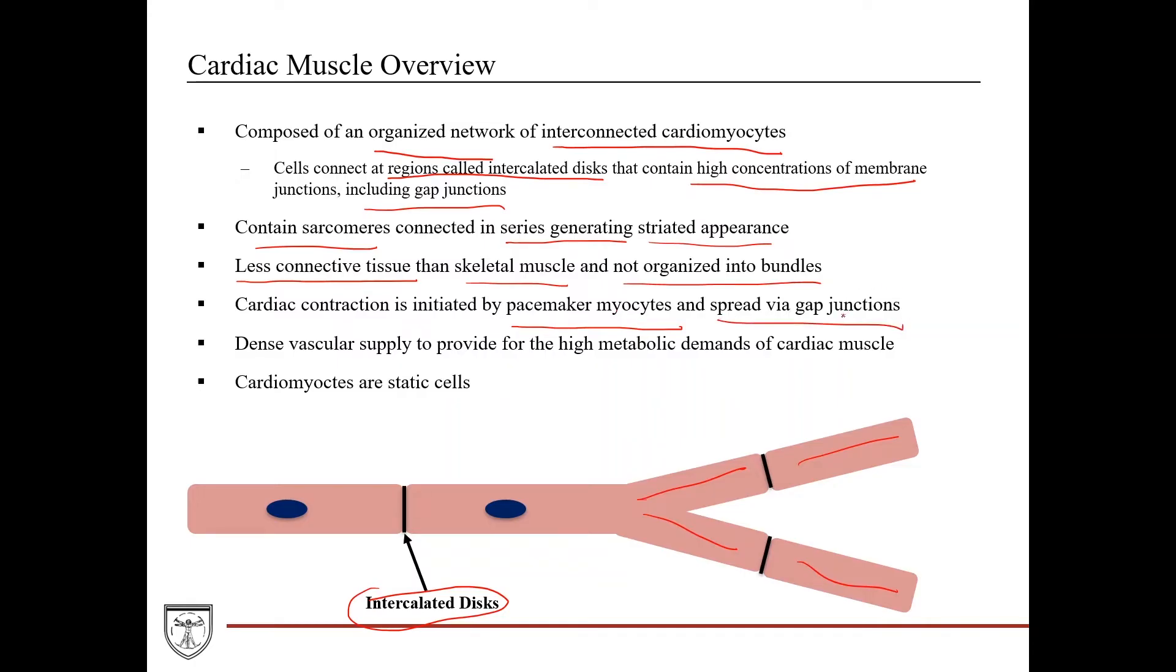So there's no nervous system input involved in at least initiating and carrying out contraction. However, the nervous system can modulate the heart rate and heart contractility, as we'll talk about a little bit later. Cardiac muscle has a dense vascular supply to provide for the high metabolic demands of cardiac muscle. Your heart has to be pumping every second of your entire life, and so it needs constant new supply of oxygen and nutrients, and so you need that dense vascular supply.